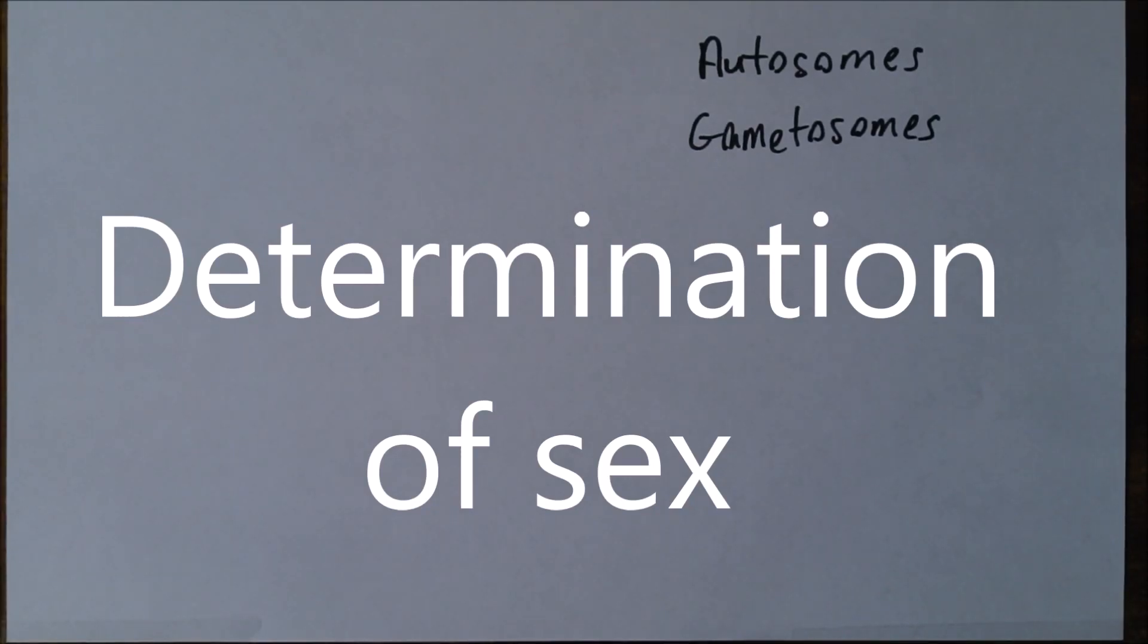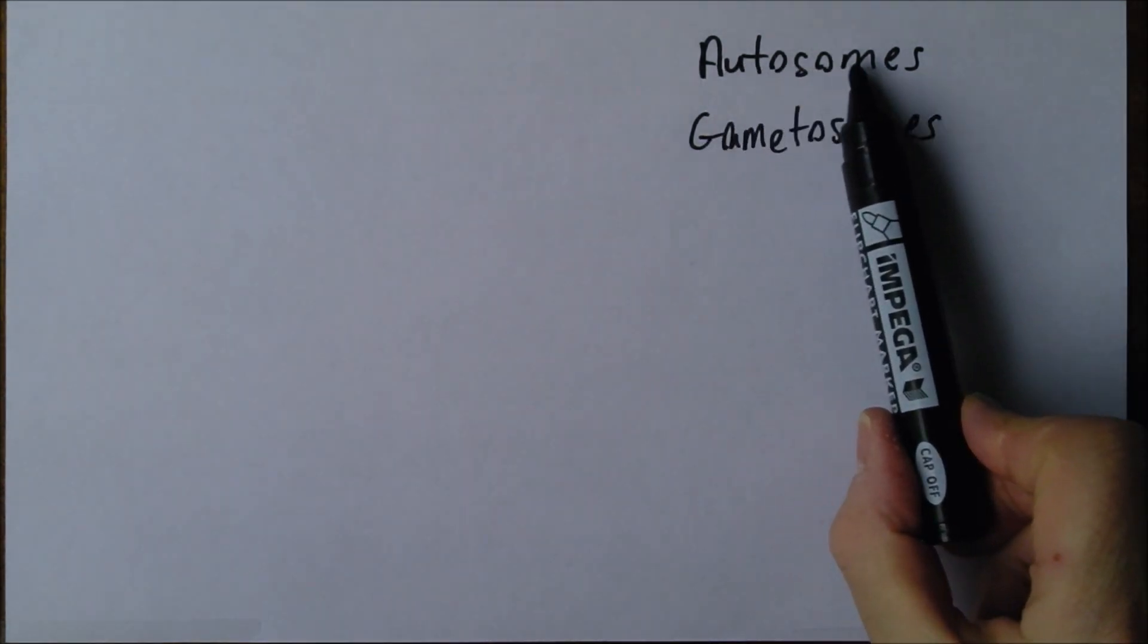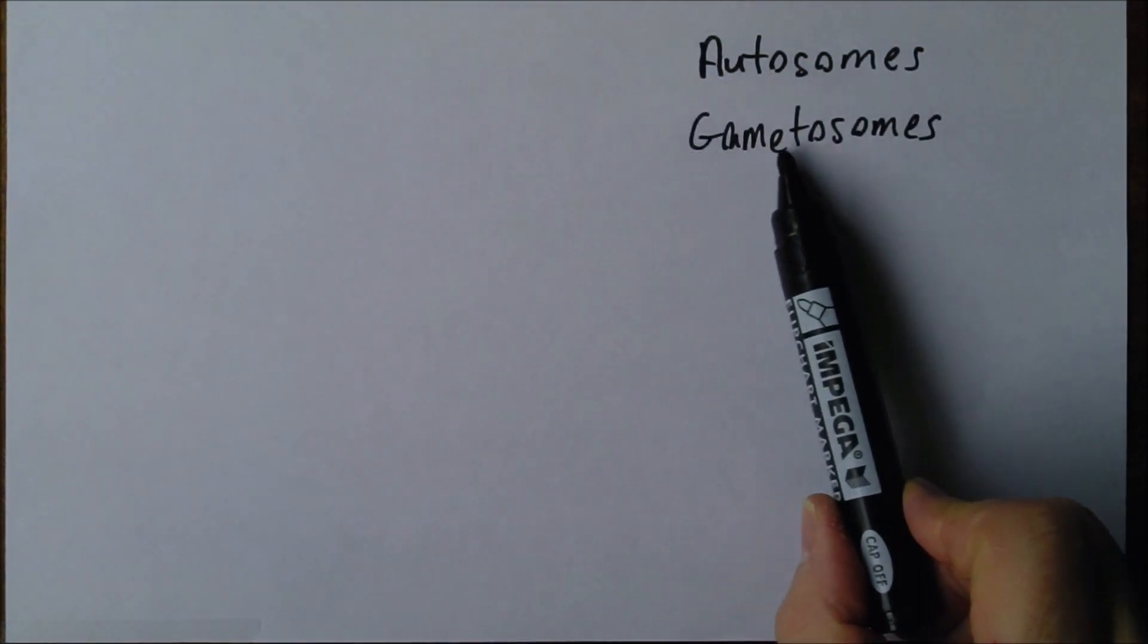So what is it that determines the sex of a child? Well, we've got two sorts of chromosomes: autosomes and gametosomes.